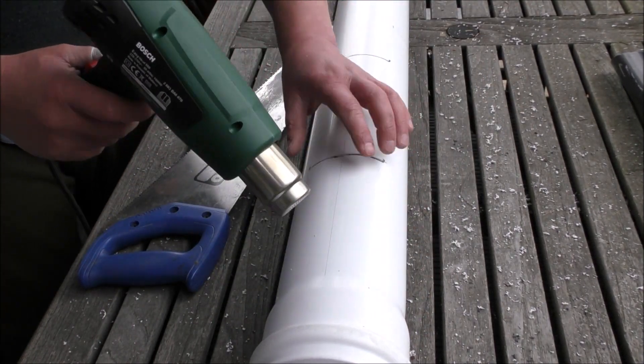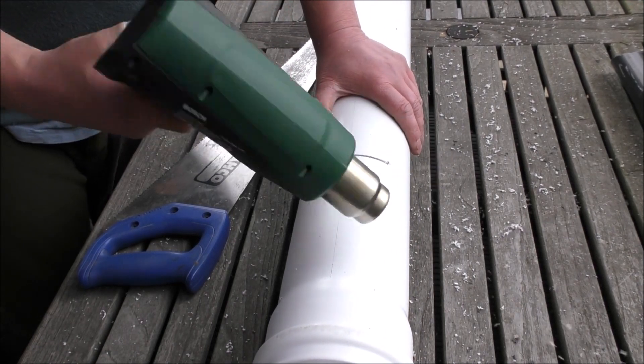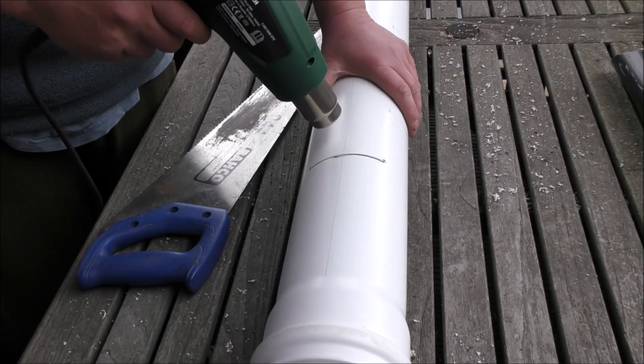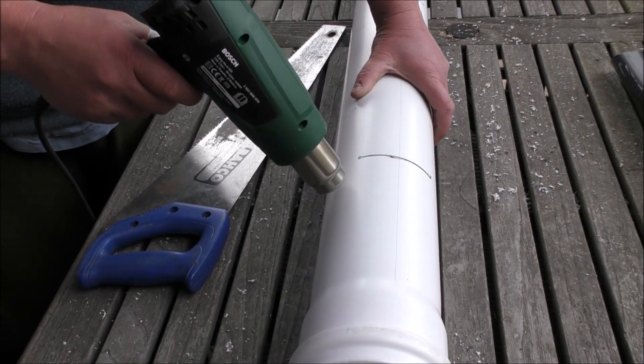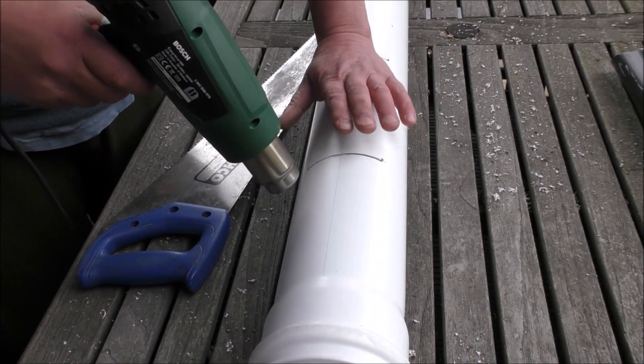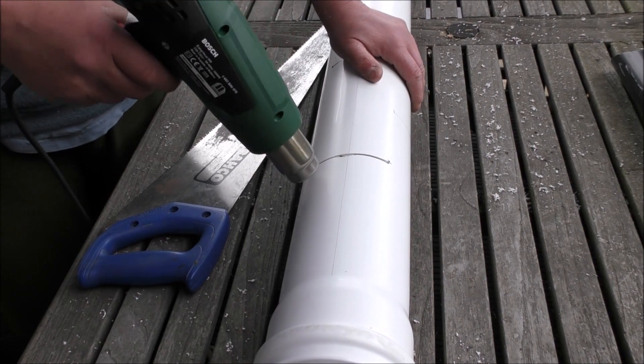You can use little gas burners or anything, just as long as you're careful not to burn the pipe. So we'll put that on full power. Now this takes about two minutes of constant high heat to make the pipe soft enough to be able to bend and create the shape we need.